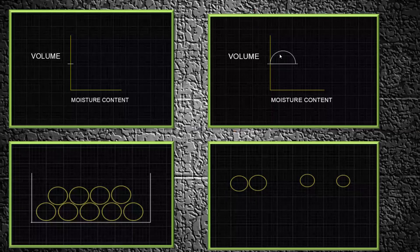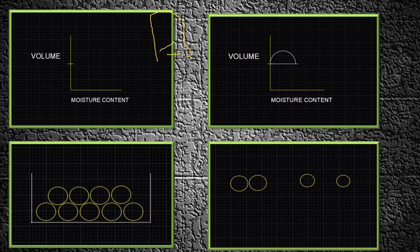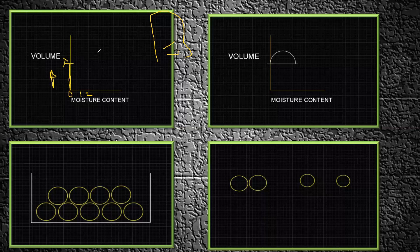Let us plot a graph with moisture content on the X axis and volume of sand on the Y axis. Initially I've taken sand in a very dry condition. Let us consider the volume of sand is some value X and the moisture content is zero — that is, it's a dry condition. This is that point where we are in a dry condition.